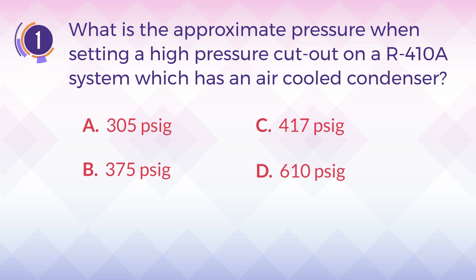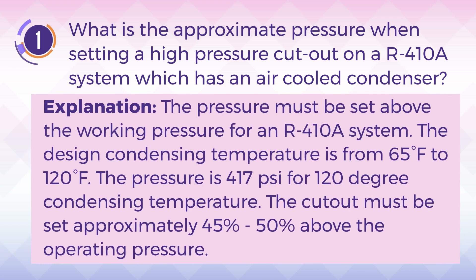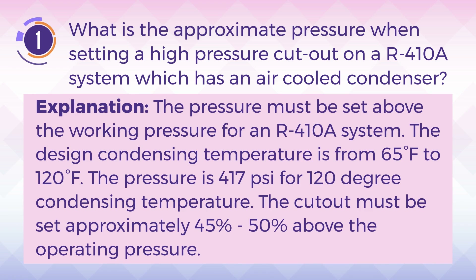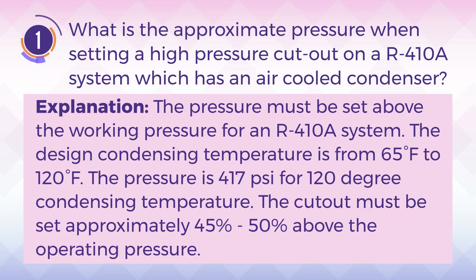The answer is D. 610 PSIG. Explanation: The pressure must be set above the working pressure for an R410A system. The design condensing temperature is from 65 degrees Fahrenheit to 120 degrees Fahrenheit. The pressure is 417 PSI for 120 degree condensing temperature. The cutout must be set approximately 45% to 50% above the operating pressure.